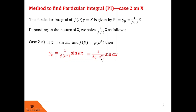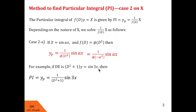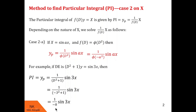Let us understand this with the help of an example. Consider the differential equation (d² + 1)y = sin 3x. Then the corresponding particular integral will be given by 1/(d² + 1) of sin 3x. We have to replace every d² by minus a square; here a is 3, so minus a² will be minus 9. We put minus 9 here, so minus 9 plus 1 is minus 8, giving yp = minus 1/8 times sin 3x.